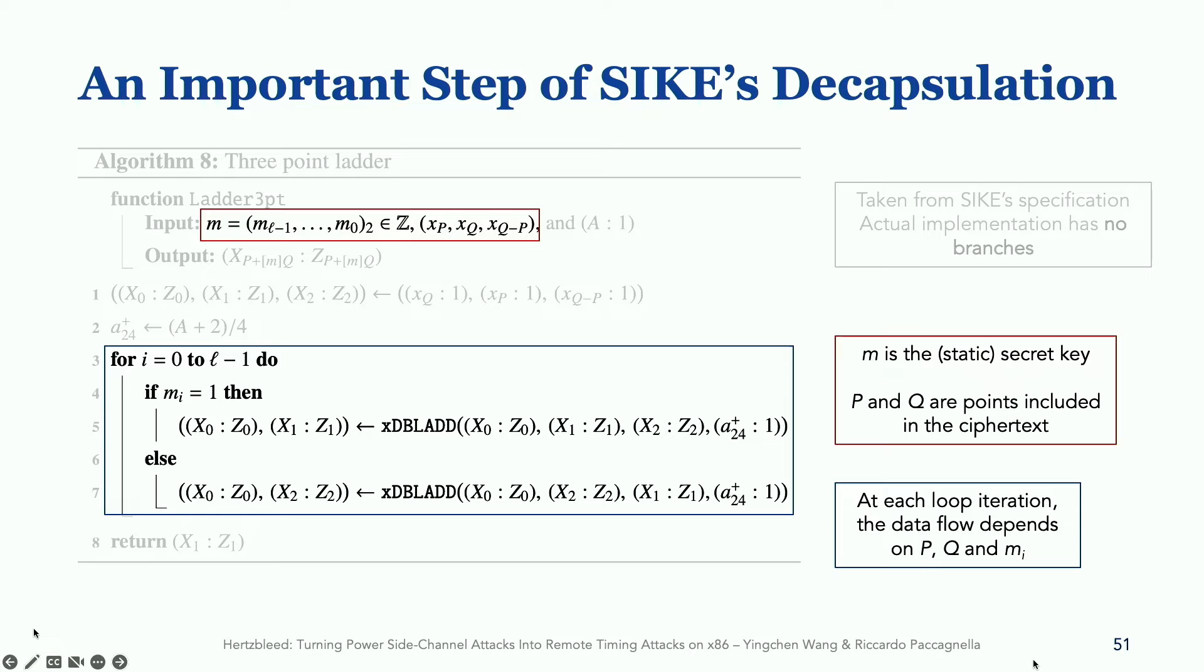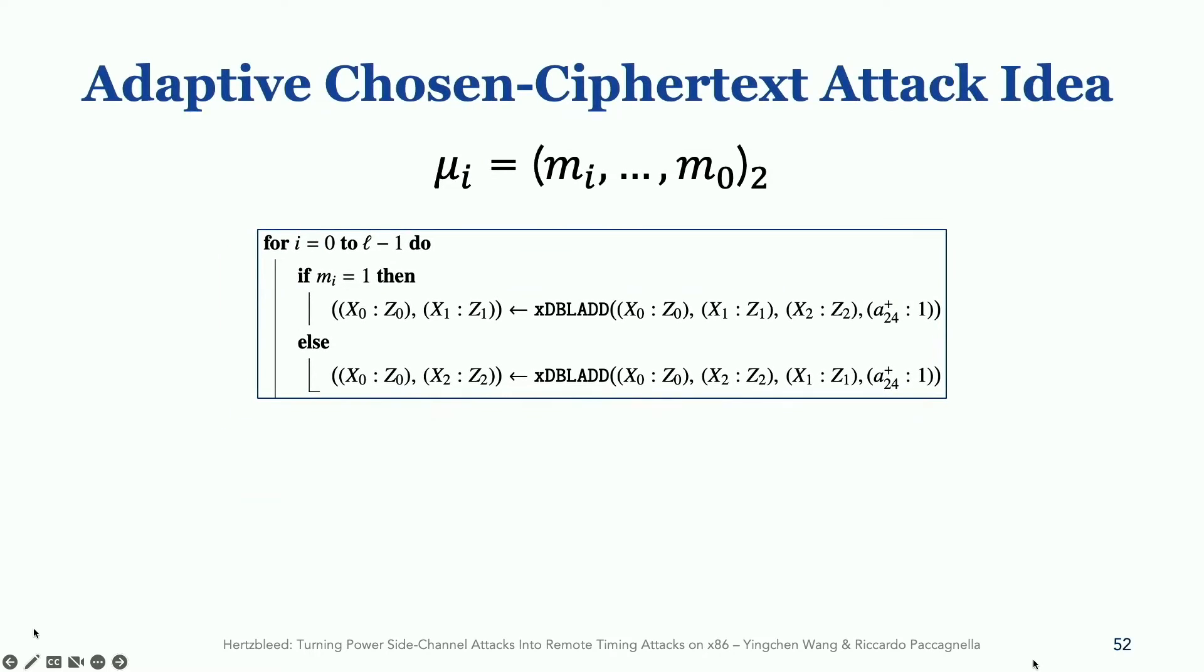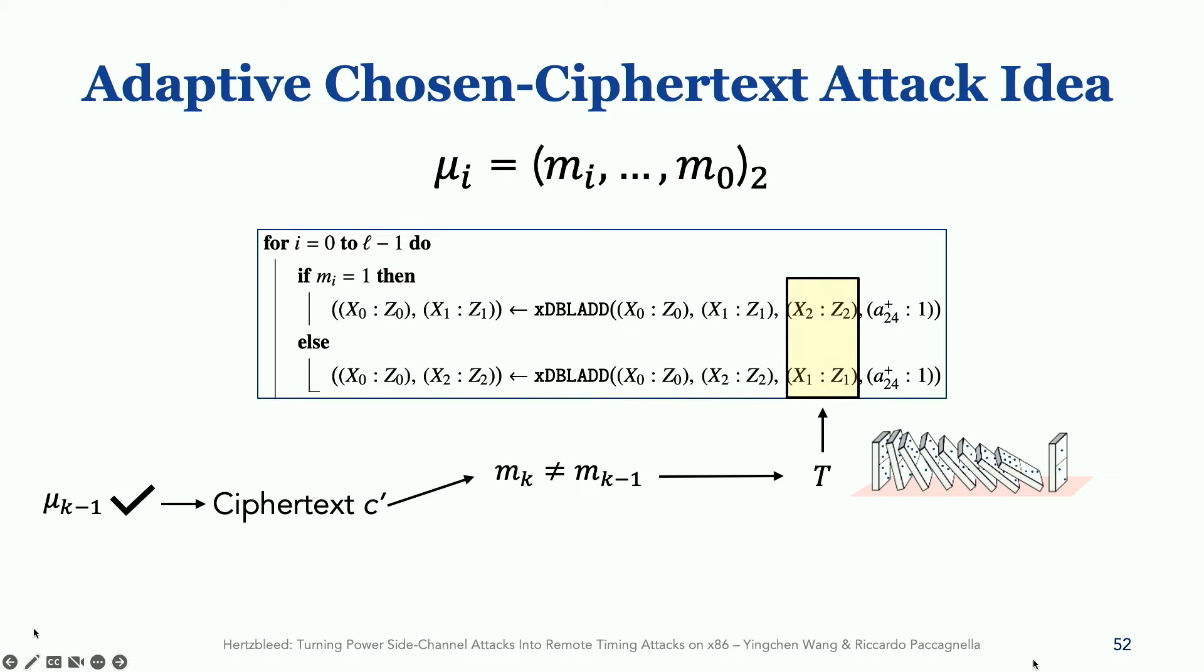Now, let's take a look even deeper into this xDBLADD function. There's a vulnerability inside this xDBLADD function, and by exploiting which, we can develop an adaptive chosen cipher text attack, which means if we know the secret key up to bit k minus one, the attacker can come up with a cipher text C prime, such that if the next unknown bit, mk, does not equal to mk minus one, it can put a special point T of order two into this function and trigger an edge case. Once this edge case is triggered, it creates a domino effect on zero. However, in the other case, such a point T will only be put into this function as the second input, and this does not trigger the edge case, so there will be no domino effects on zero.